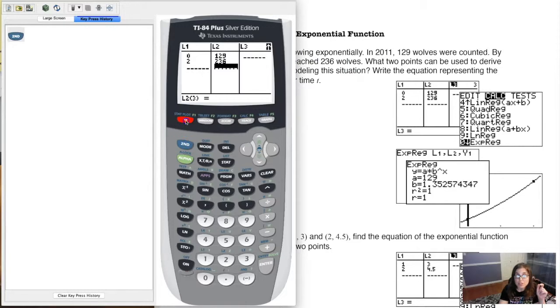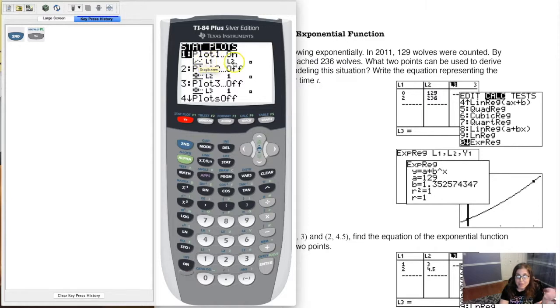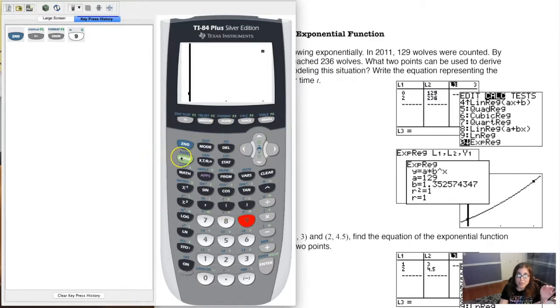Actually, I guess we could look at our stat plot. It is ready to go. So I have a scatter plot selected. I've got L1 against L2. I hit zoom 9. And there's my two ordered pairs. And I'm going to try and fit an exponential model between it.